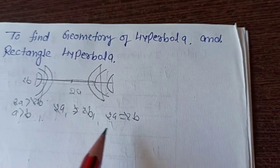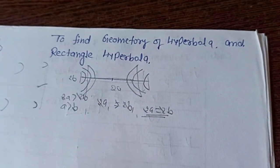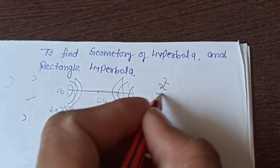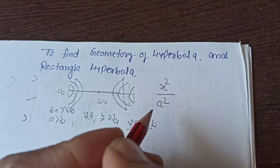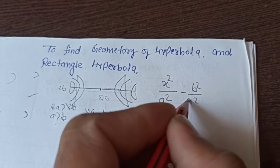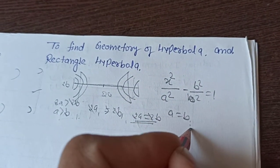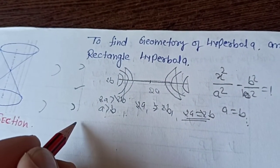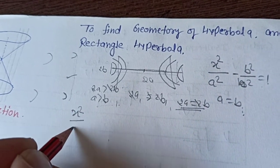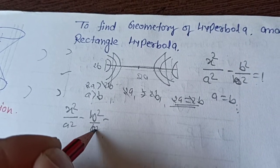This condition is called the Rectangle Hyperbola. In your basic concepts, the hyperbola equation is x² / a² minus y² / b² = 1. But we know that A and B are equal. So such a hyperbola is called the Rectangle Hyperbola, and the equation simplifies to x² minus y² = a².